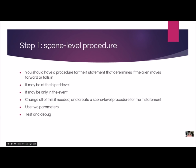We're going to start with step one: create a scene-level procedure for putting it all together. You might have already done this with an if statement checking a condition to determine if you move forward or fall in — maybe at the biped level, or maybe the whole if statement is in the event. Either way, you're going to need to change your code just a little bit. We're going to create a scene-level procedure using two parameters. Let's get into Alice and see what I'm talking about.